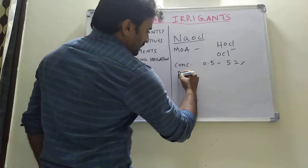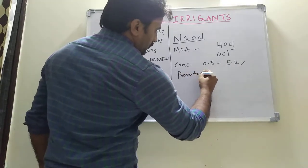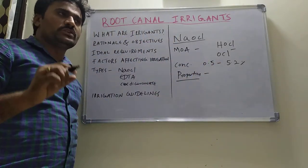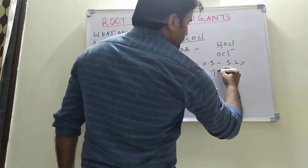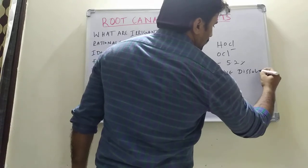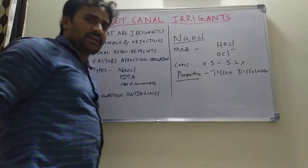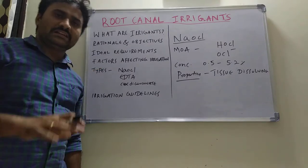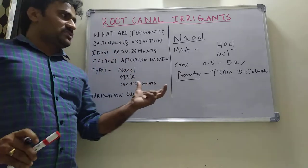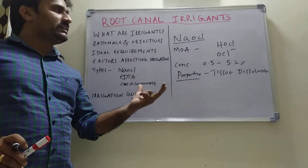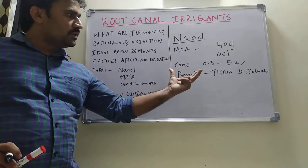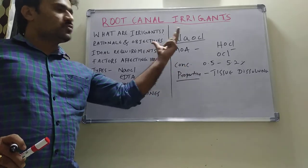The main property of sodium hypochlorite is its tissue dissolving capacity — that means pulp dissolving capacity. In 20 minutes, it completely dissolves the pulp tissue. Any pulpal remnants will be taken care of by this sodium hypochlorite solution. This is the sole and main advantage of sodium hypochlorite.